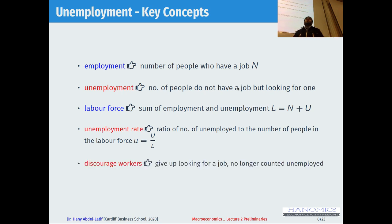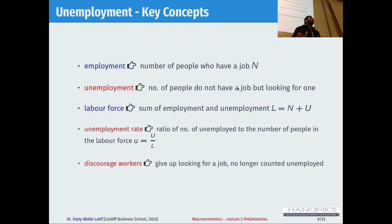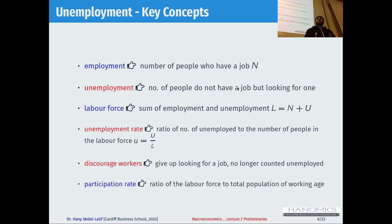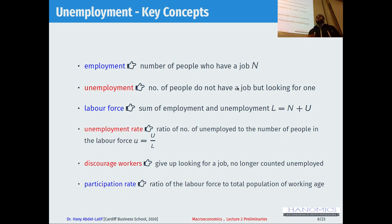Discouraged workers are those who give up looking for a job — they didn't find a job and just gave up. These are no longer counted as unemployed since they are no longer looking for a job. Or those who are wealthy enough to choose not to work — these are also not counted as unemployed. It's a very specific definition, so you have to be careful. The participation rate is the ratio of the labor force to the total population of working age.